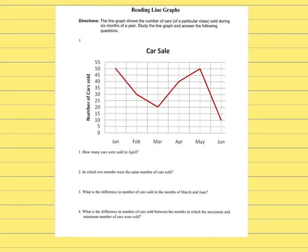Another piece of information you can get from the graph: in January, how many cars were sold? If you want to find that information, you go all the way up until the line and then go all the way to the left — 50. February: all the way through the line and to the left — 30.